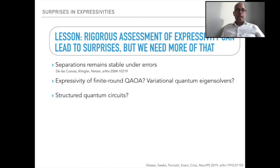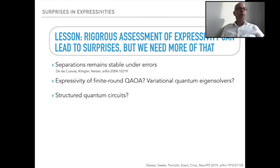The lesson to be learned is that tensor networks provide powerful tools to capture probability distributions in probabilistic modeling in more than one way, and a rigorous assessment of the expressivity of various forms can lead to big surprises — vast separations in expressive power between very different representations. These separations remain stable under errors — when looking for an approximate rather than exact representation, the separations remain. But we need more insights of a similar kind on the expressivity of finite-round quantum approximate optimization algorithms, structured quantum circuits, or variational quantum eigensolvers.